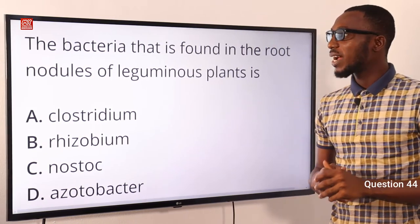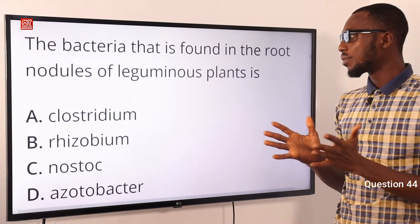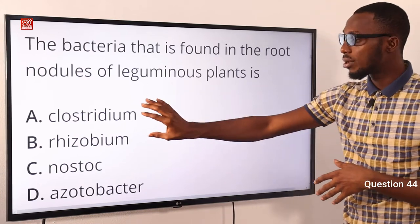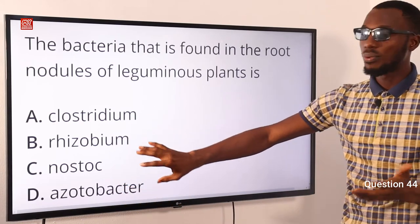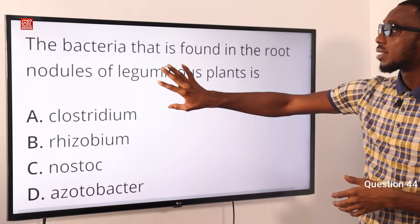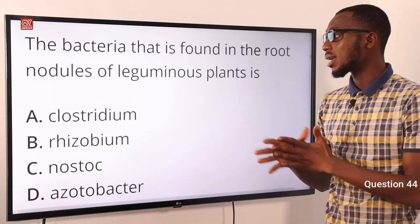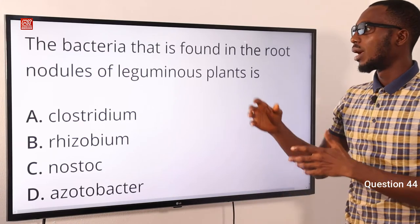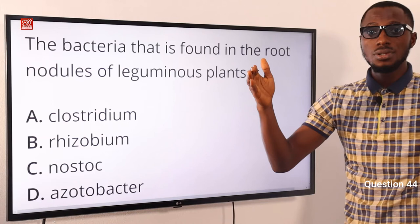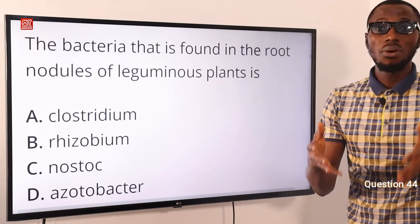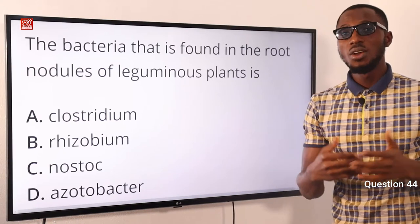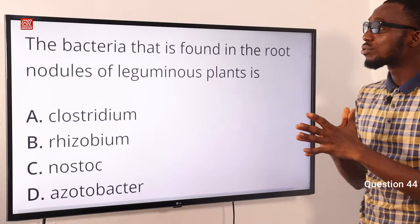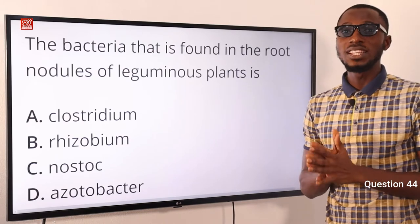Question 44. The bacteria found in the root nodules of leguminous plants is what? We have two types of nitrogen-fixing organisms: free-living ones like Clostridium and Azotobacter, and symbiotic ones like Rhizobium, which is found in the nodules of leguminous plants. It derives energy from the breakdown of carbohydrates in the host tissue, uses gaseous nitrogen, and produces amino compounds and proteins which it shares with the host plant. The correct answer is option B for Rhizobium.